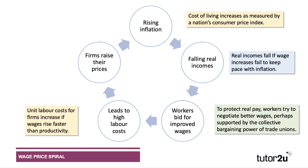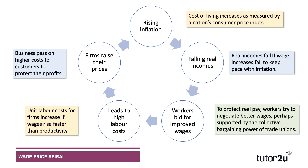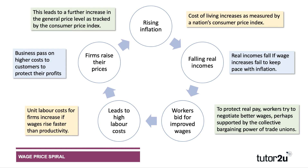And if unit labour costs go up — for many businesses the wage bill is the big part of their costs — firms may decide to increase their own prices. They may choose to pass on higher costs to consumers, to their customers, to protect their profit margins. And if prices go up, that leads to a further second-round increase in the general price level as tracked by the Consumer Price Index. With wages going up and inflation going up, people's expectations of inflation can also start to rise. There's a circularity here: higher inflation triggers higher wages, and higher wages can then lead to higher inflation.